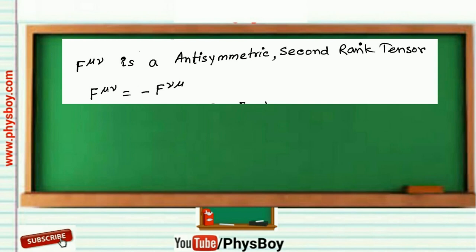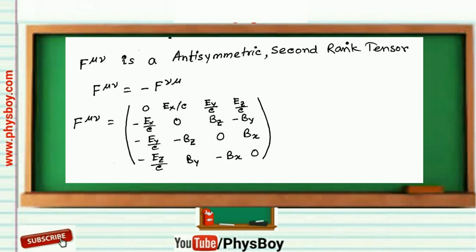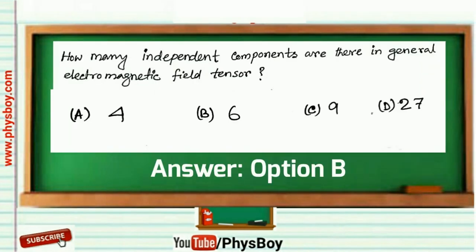So F mu nu can be written in matrix form like this. So you see that there are total six components. So the correct answer is 6, that is option B. If this video is helpful, then please share it to any physics-related social media group.